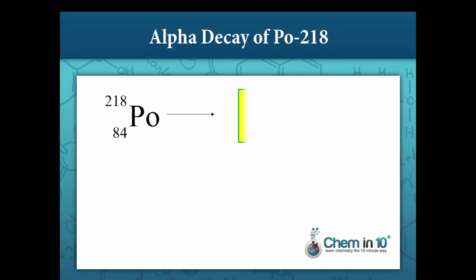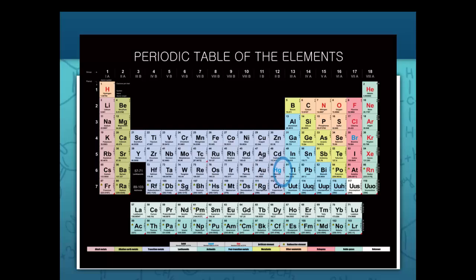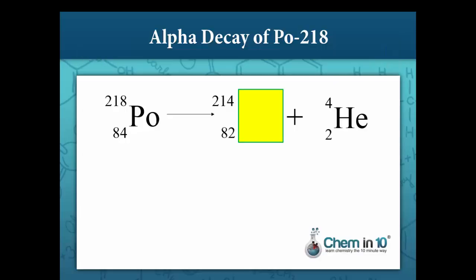Polonium-218 also undergoes alpha decay, giving off an alpha particle to form a more stable nucleus. The sum of the mass numbers on the product side must equal those on the reactant side: 4 plus our unknown mass number must equal 218, so the unknown mass number is 214. The sum of atomic numbers: our unknown plus 2 must equal 84, so the atomic number is 82. Looking at the periodic table, we identify our unknown nuclide as lead-214.